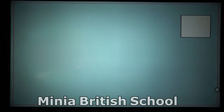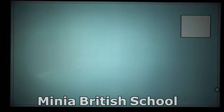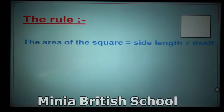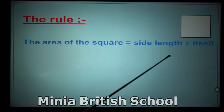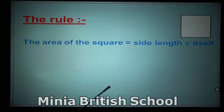What should I do? How can I find the area for this one? First, what is the name for this polygon? It's a square. Here I have a rule to find the area of a square: the area of the square equals side length times itself. You have to keep the rule — the area of the square equals side length times itself.